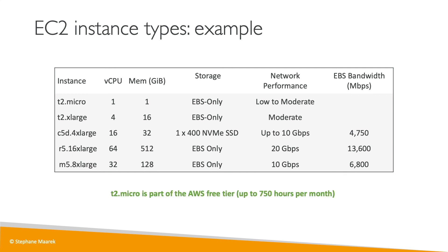For this course, the T2 micro is part of the AWS free tier — you can get up to 750 hours per month of T2 micro, which basically represents running that instance continuously for a month. This is what we'll be using in the hands-on in the next lecture. So this was a short introduction to EC2 — it's going to get very practical very soon. See you in the next lecture.